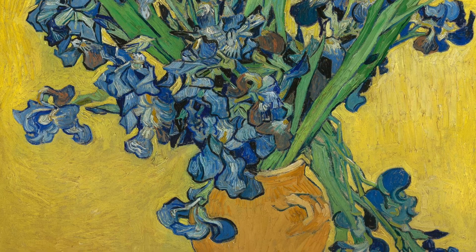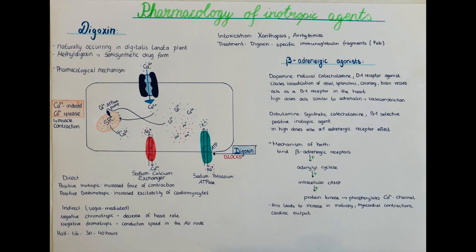The treatment for digoxin intoxication is with digoxin-specific immunoglobulin fragments, also known as FAB. If the patient develops AV conduction disorders we can give atropine, and for electrolyte imbalances we can give potassium aspartate, potassium chloride, as well as magnesium.